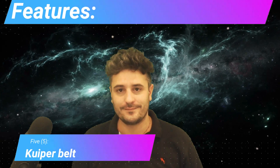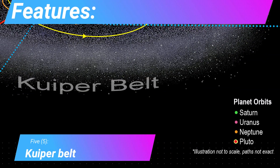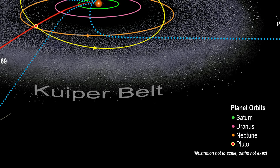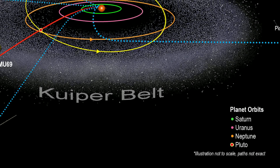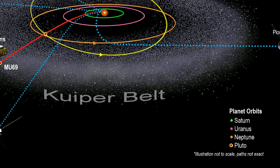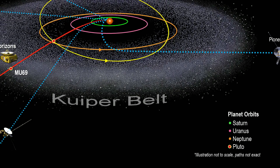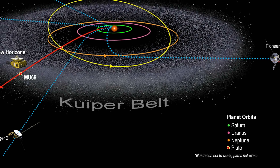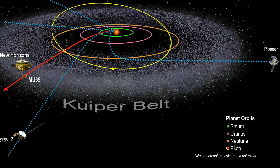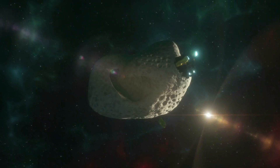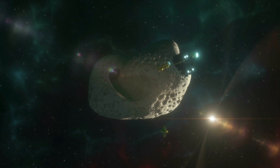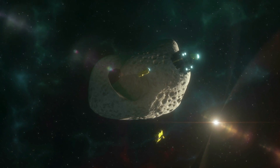Number five: the Kuiper belt. Beyond Neptune is another asteroid belt, but these are mostly icy objects. They can't form into planets as well because Neptune's gravity keeps stirring them up. The Kuiper belt would be a good place for future space colonies to mine water.